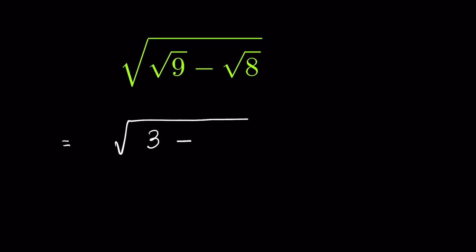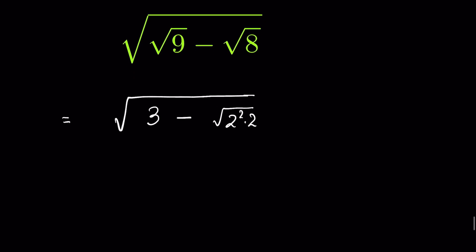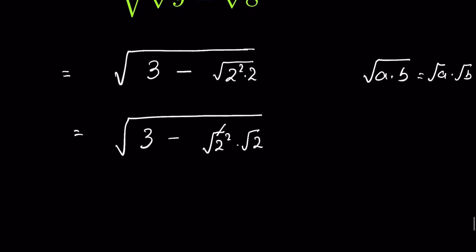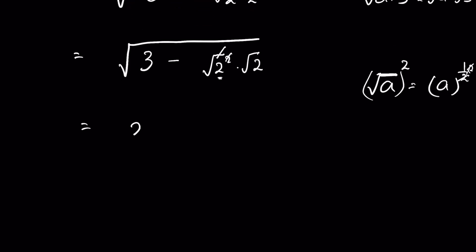Minus square root of 8, which we can write as 2 squared times 2 under square root. Since square root of a times b equals square root of a times square root of b, this becomes square root of 2 squared times square root of 2. You can remove the square root with the square, so it is 3 minus 2 times square root of 2, all under square root.